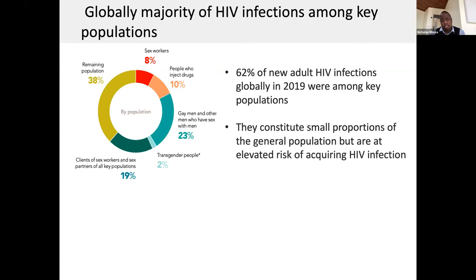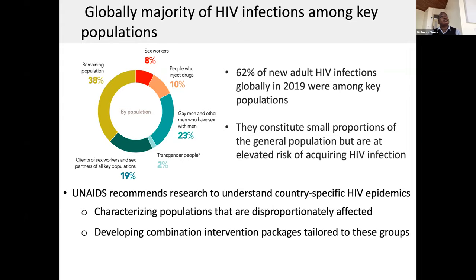The UNAIDS recommends operational research to really understand country-specific HIV epidemics. This involves several approaches, one of which includes characterizing populations that are most at risk of HIV infection, and also developing combination intervention packages that are tailored to these groups.